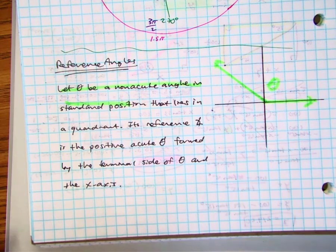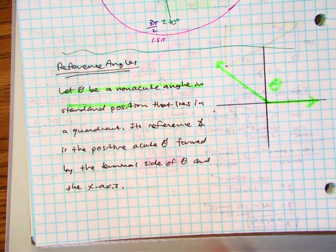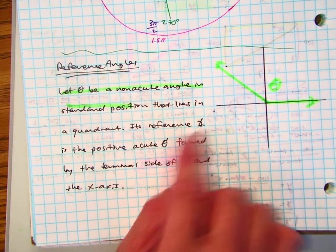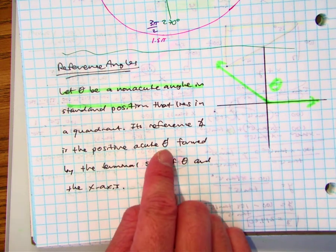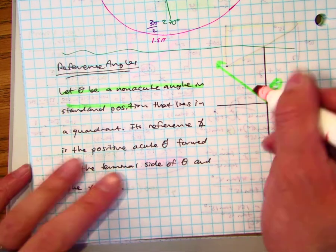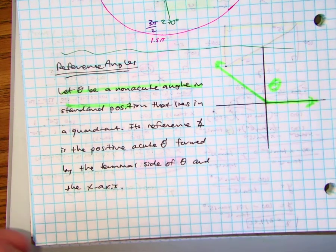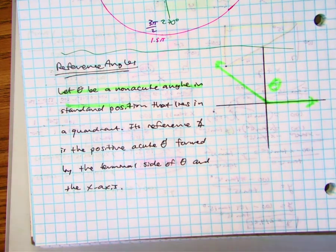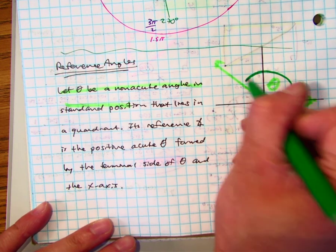This is theta, which lies in a quadrant. Its reference angle is a positive acute angle. So on the other side, in green, this is your positive angle theta.